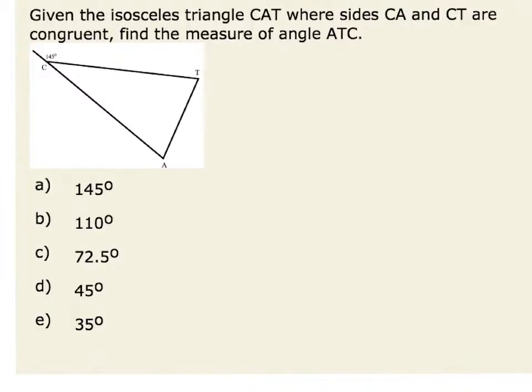Since this is an isosceles triangle with side CA congruent or equal in length to CT, we also know that the base angles or the angles opposite those congruent sides are also equal in measure.